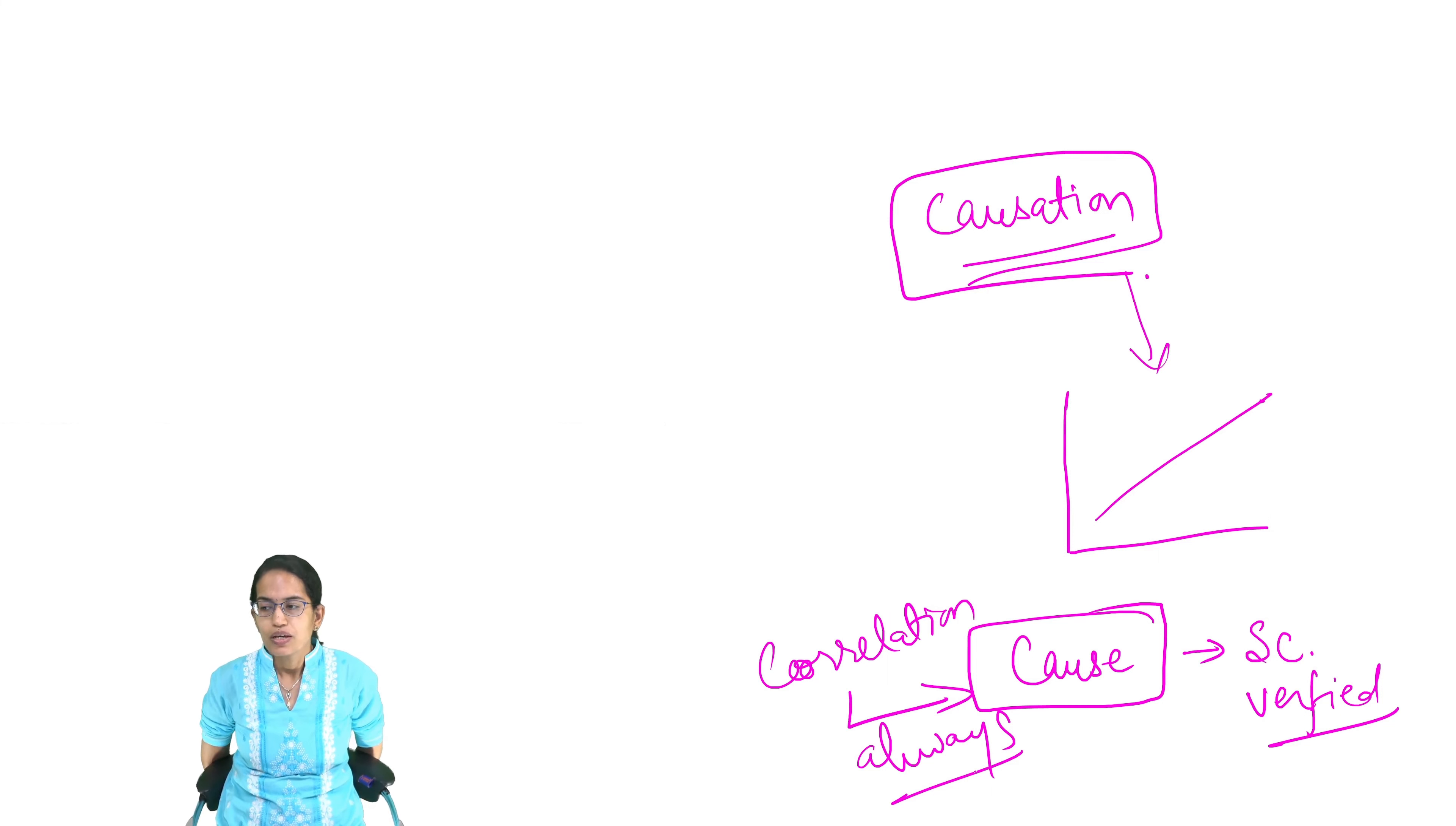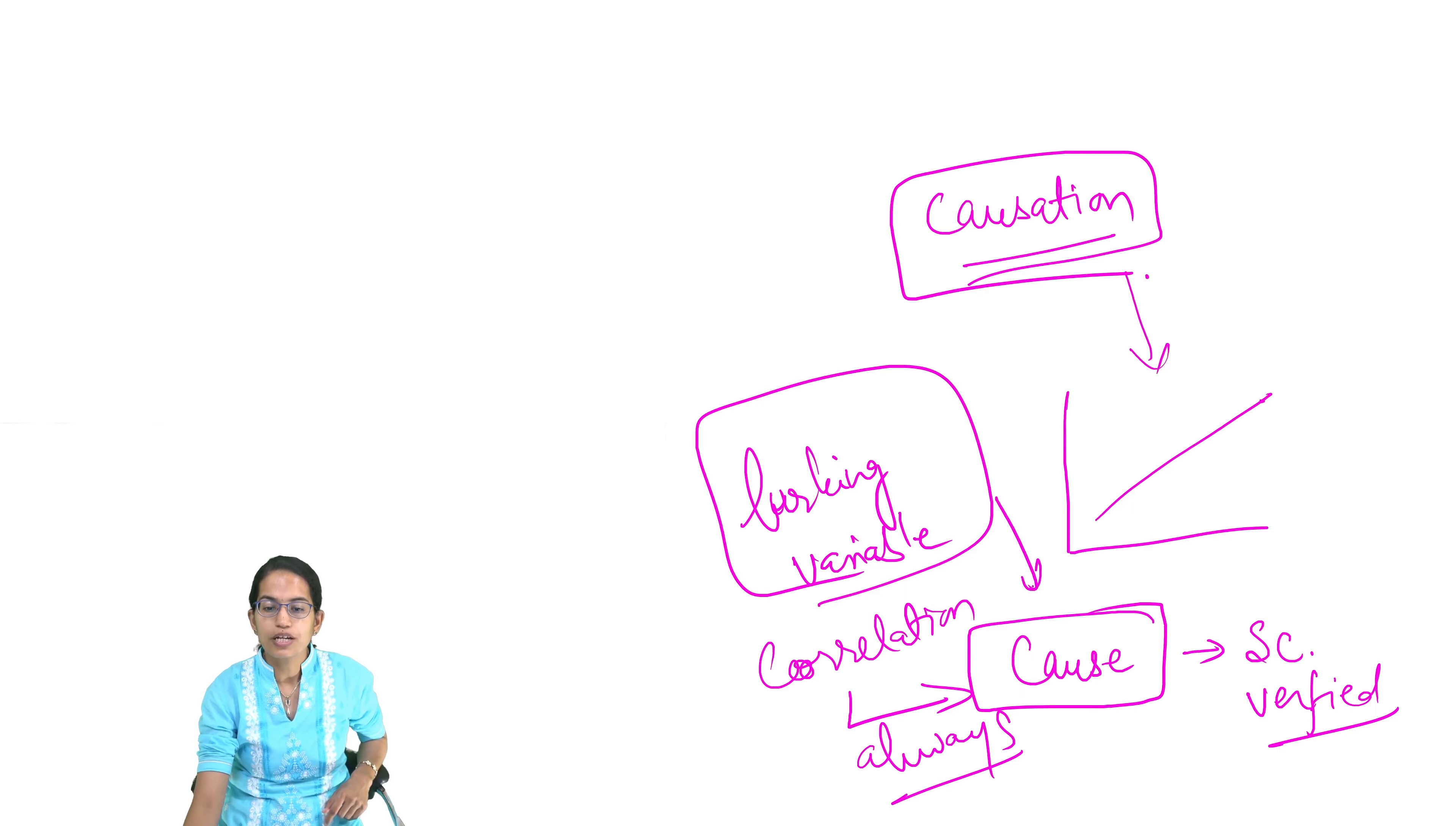To establish a cause, one must rule out any possibility of lurking variables. What are lurking variables? We have already covered before. The idea is: could the cause be due to some other reason? And if that reason is not taken into account, then I cannot establish a solid relation between the two things.